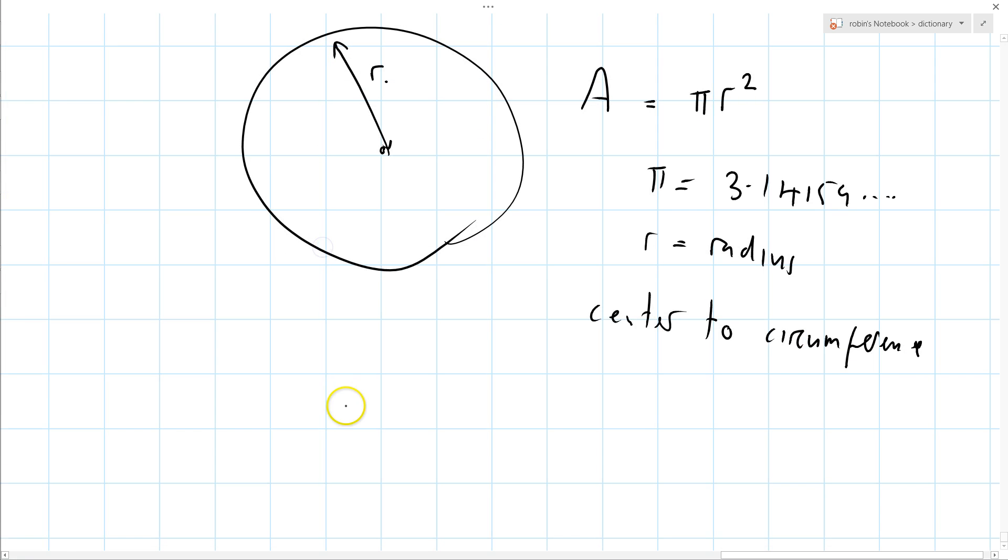So the area is pi r squared. If r equals 3, then the area equals pi times 3 squared, and of course 3 squared is 9, so it's pi times 9.